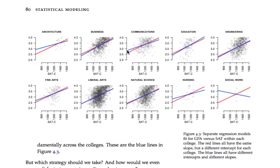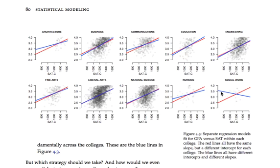You'll notice, however, that the blue lines have a very strange feature for at least one college. The slope is negative for the College of Social Work, which seems strange — you would expect a priori that a higher SAT score would predict a higher GPA, at least on average. This is almost certainly an artifact of sampling variability: we've got a very small sample size in the College of Social Work — about 9 or 10 students. Just by chance, the vagaries of those students' experiences led to a negative slope that we would not expect to see if we aggregated data across a decade.